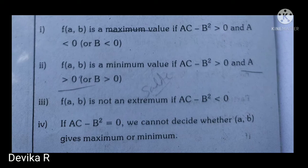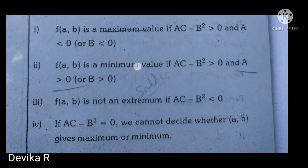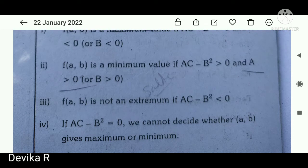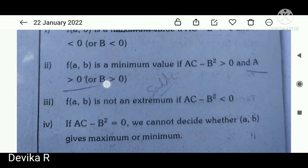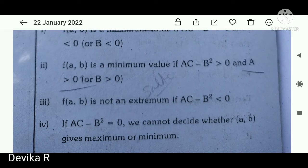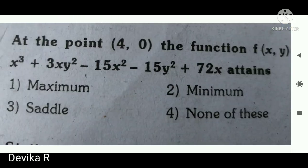If AC − B² is greater than zero and A is less than zero, then f(a, b) is a maximum value. If AC − B² is greater than zero and A is greater than zero, it is a minimum value. If AC − B² is less than zero, it is a saddle point. If AC − B² equals zero, we cannot decide whether the point gives a maximum or minimum.